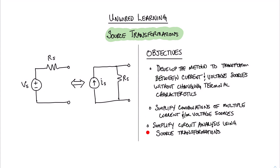We're going to learn how to do circuit analysis that is simplified by the use of source transformations. You can see over here on the left what we're talking about when we say source transformation. Here we have a voltage source and a realistic source resistance in series with that voltage source. Over here we have a current source with its parallel source resistance. It is possible through some simple math to go back and forth between these kinds of source transformations without changing the terminal characteristics.